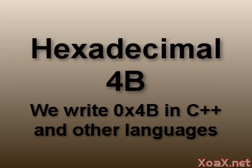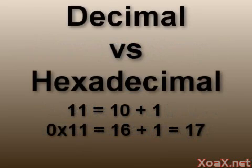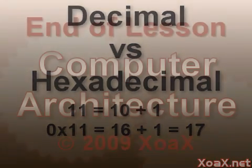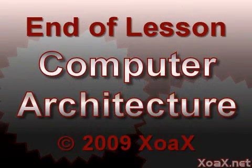For programming purposes, we prepend 0x to hexadecimal numbers to signify the number base 16, so that 4b is written as 0x4b in C++. This allows us to distinguish the number base, so that we know that 1 1 equals 10 plus 1, and 0x11 equals 16 plus 1, which is 17. This concludes the lesson.